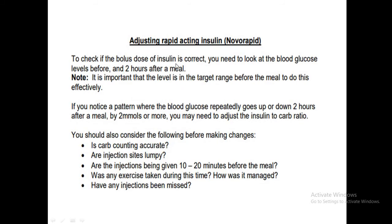To adjust bolus (rapid-acting) insulin, look at blood glucose levels two hours post-meal. Also consider: is carb counting accurate? Are injection sites lumpy? Are injections being given 20 minutes before the meal? Was there any exercise and how was it managed? Is there any injection that was missed? If blood glucose goes up or down by more than 2 mmol/L two hours after a meal, the insulin-to-carbohydrate ratio needs adjustment.